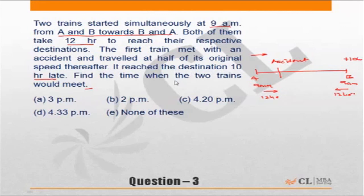Find the time when the two trains would have met. The question also tells us that after the accident the train traveled at half its original speed.